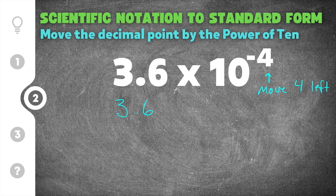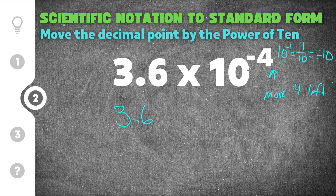If you get confused and can't remember whether a negative exponent moves the decimal left or right, you can always expand 10 to the negative fourth. 10 to the negative first power is like 1 over 10, or basically dividing by 10. So I'll expand this as 3.6 divided by 10, four times, because 10 to the negative fourth is the same as dividing by 10 four times.